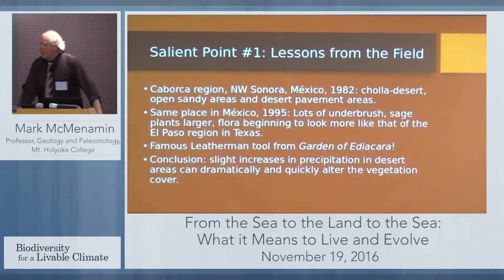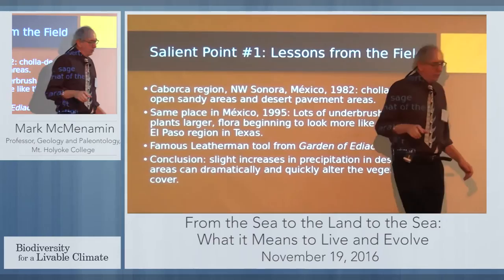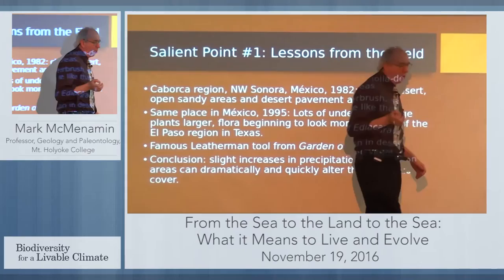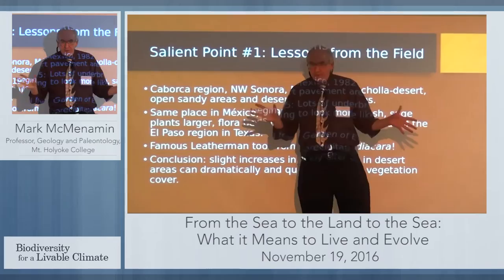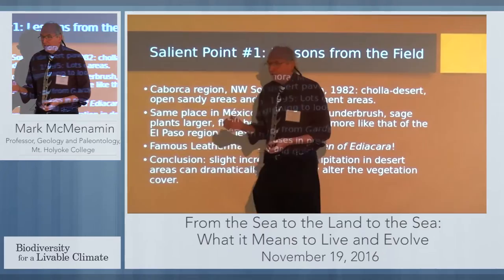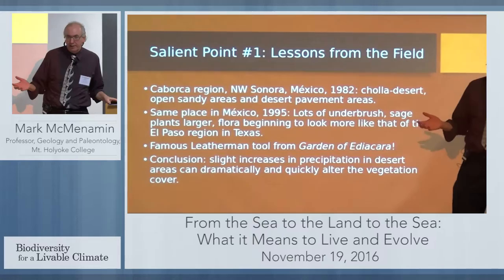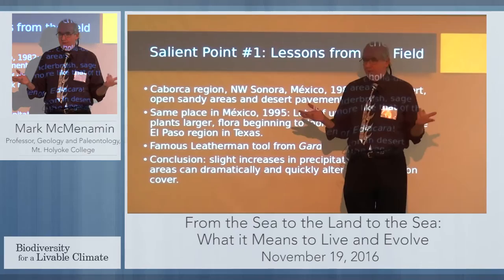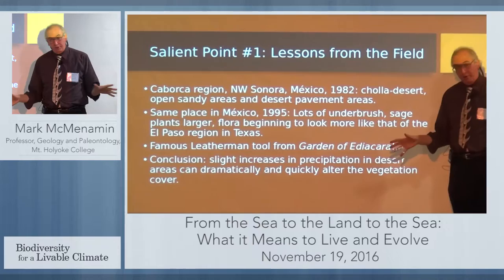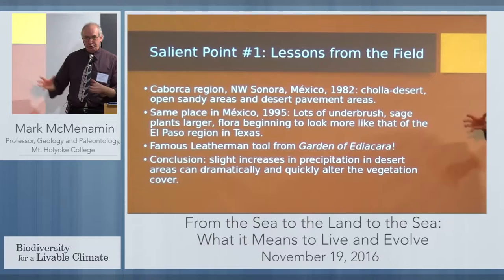The Ediacarans are an enigmatic group of organisms from before the Cambrian boundary — so in marine strata from before 542 million years ago. They include a variety of fascinating forms of creatures; they're almost entirely soft-bodied, and there's still debate as to whether they represent the earliest animals or some very unique group that has completely gone extinct — what Dolph Seilacher would have called a sixth kingdom of life that has vanished from the planet. If you read Garden of Ediacara, I talk about all the different types and the various controversies surrounding the Ediacaran fossils.